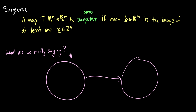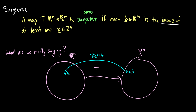We have the space Rⁿ and the space Rᵐ, and we have a function T that takes vectors in Rⁿ and puts them into Rᵐ. If we take a vector x, we can map it to some vector b, and we call this the transformation on x, equal to b. We say that b is the image of x, because we put x in as an input and the output is b — the output is called the image.